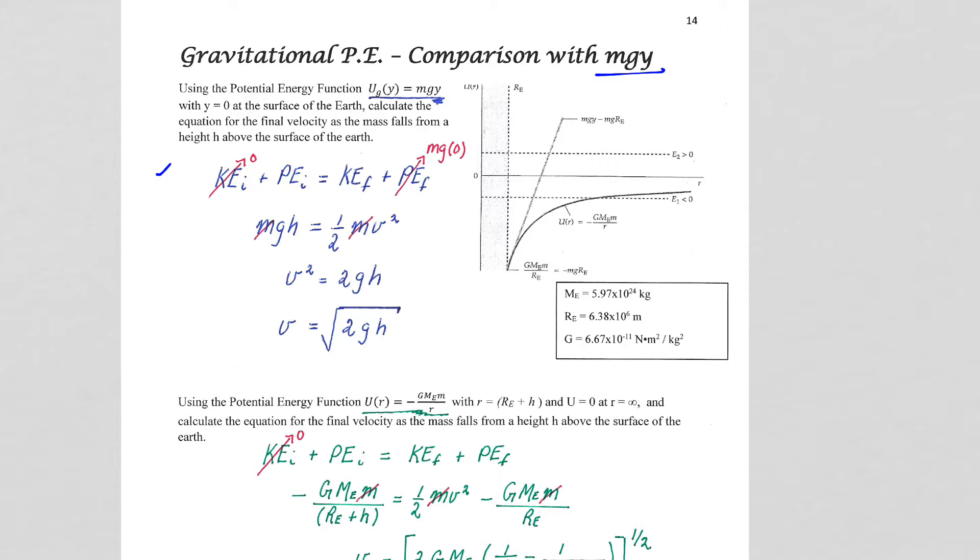For both cases, we're going to be starting off by just dropping the object from an initial height h above the surface of the Earth. So for our old calculations, our potential energy Mgh of joules will be 100% converted into kinetic energy 1/2 mv squared.